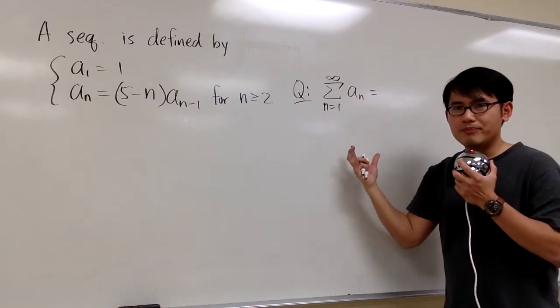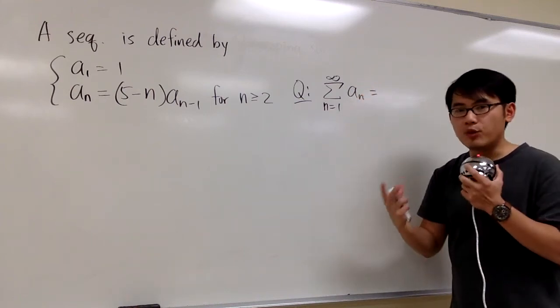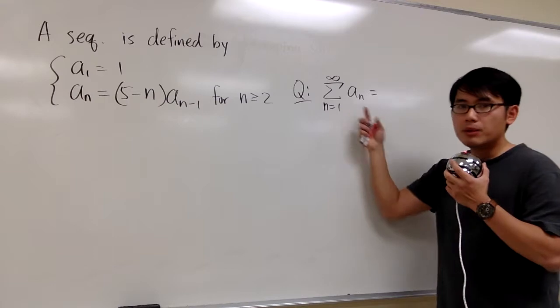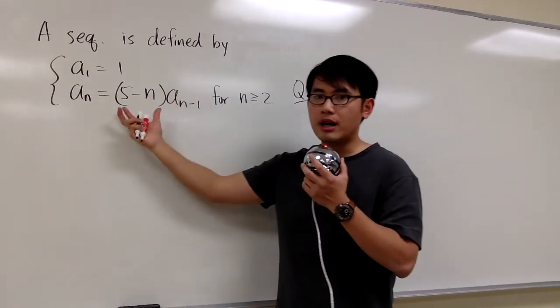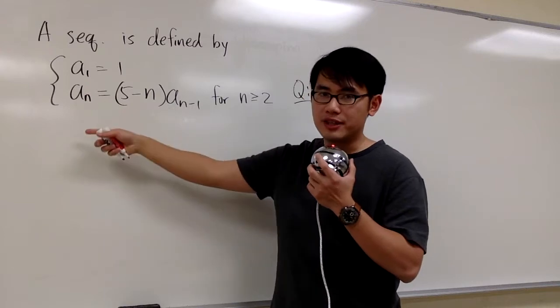This right here is kind of unusual, because we are not given an explicit formula for aₙ, we are not given a formula based on n only, but rather we have a recursive formula. A recursive formula is a formula that's based on the previous terms, right?